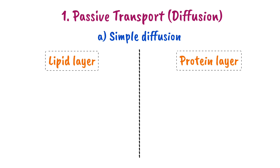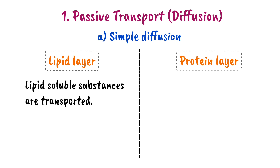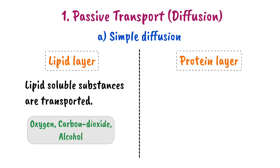Let's look at Simple Diffusion through the Lipid Layer. Lipid-soluble substances — for example, oxygen, carbon dioxide, and alcohol — can easily pass through the lipid bilayer. The cell membrane is made up of lipids, so lipid-soluble substances can easily diffuse through the lipid bilayer. This is Simple Diffusion through the Lipid Layer.